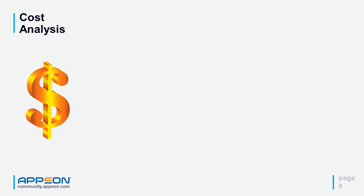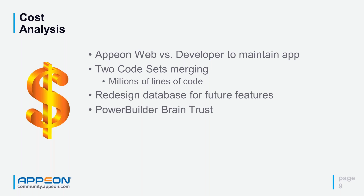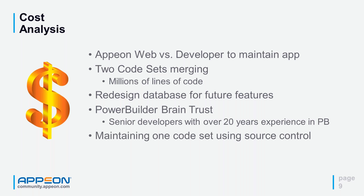We did a cost analysis to determine if Appian web was cost-effective versus hiring a full-time developer to maintain a dead-end application. We had two code sets — one for laptops and one for the main system. We didn't want to redesign databases or maintain two code sets. Appian web allowed us to maintain one code set with current staffing, saving both money and time.